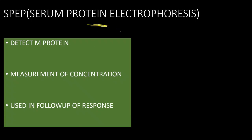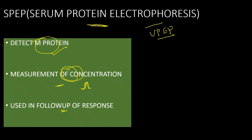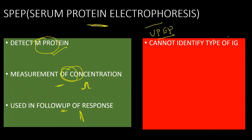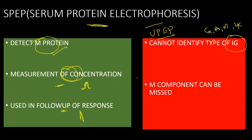Coming to the first investigation: serum protein electrophoresis. The advantage is it detects the monoclonal protein in the serum as well as in the urine (called urinary protein electrophoresis), for which 24-hour urine collection is required. It provides a quantitative value and is useful for follow-up of response to treatment. The main disadvantage is it cannot detect the type of immunoglobulin — whether IgG, IgA, or IgM, or whether it is kappa or lambda light chain. If the monoclonal component is low, it might be missed, and sensitivity is approximately 75%.